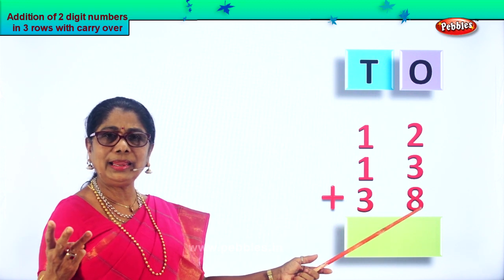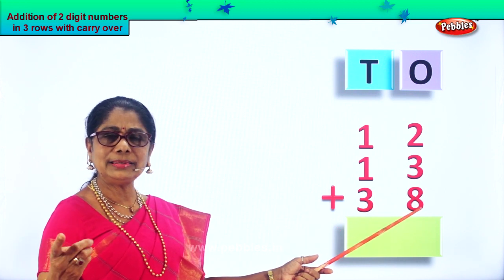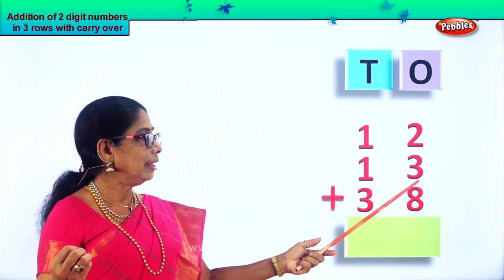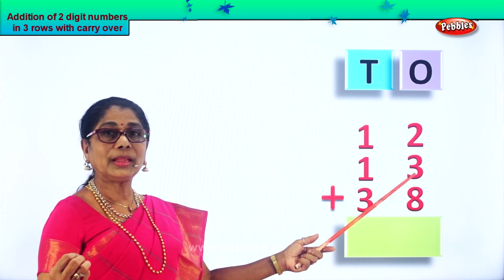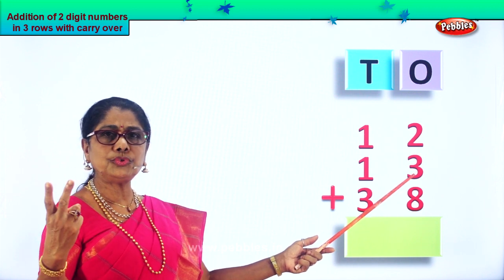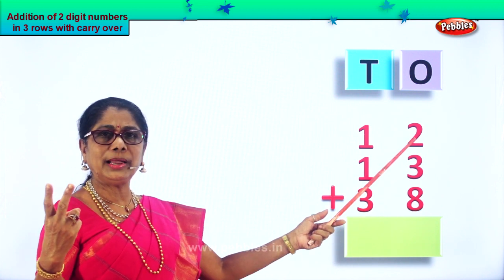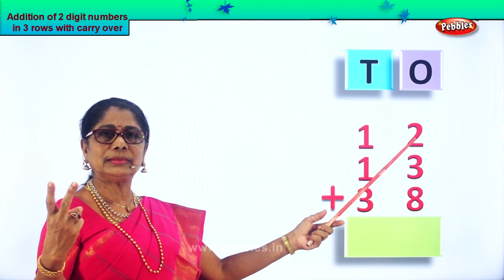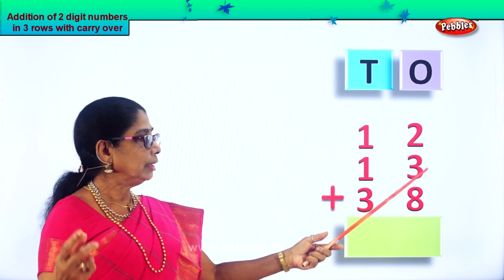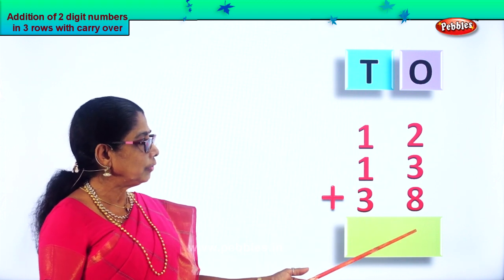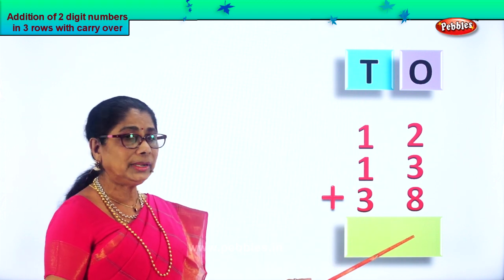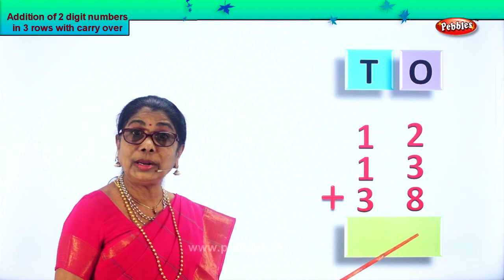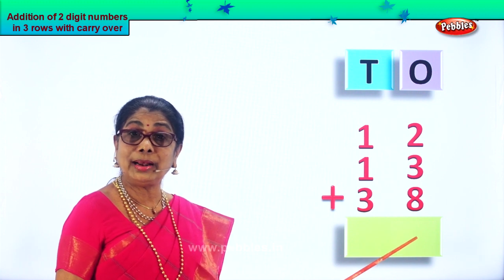Eight plus three: after eight, nine, ten, eleven. Eleven plus two — eleven in the mind, two in your fingers. After eleven: twelve, thirteen. So we put the number thirteen in the ones place.